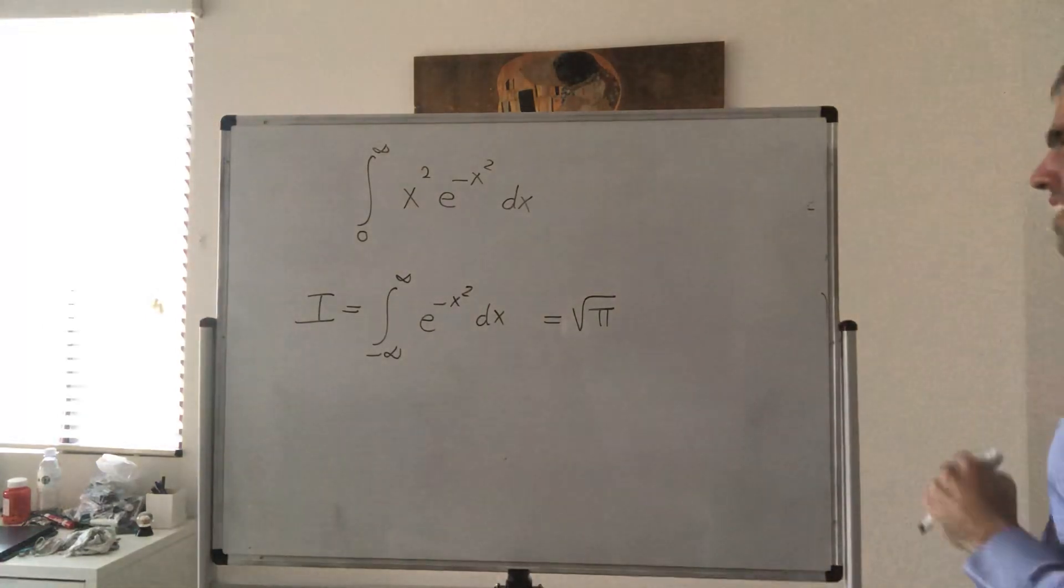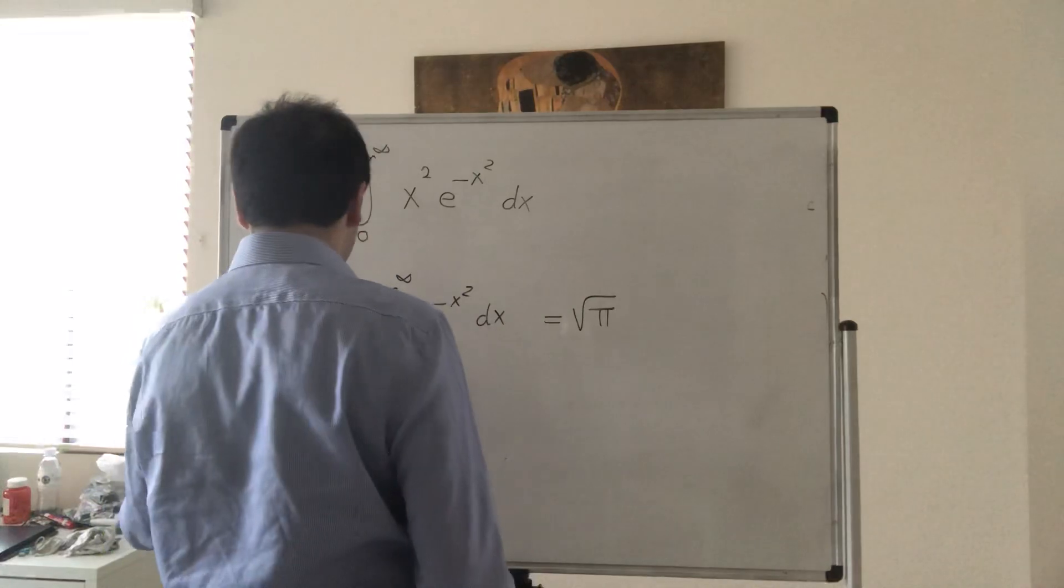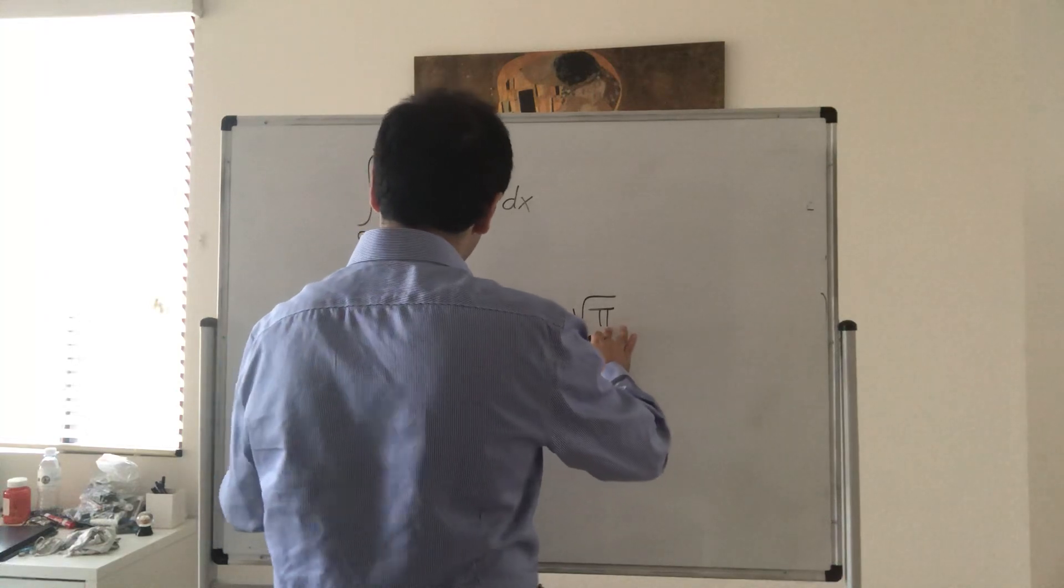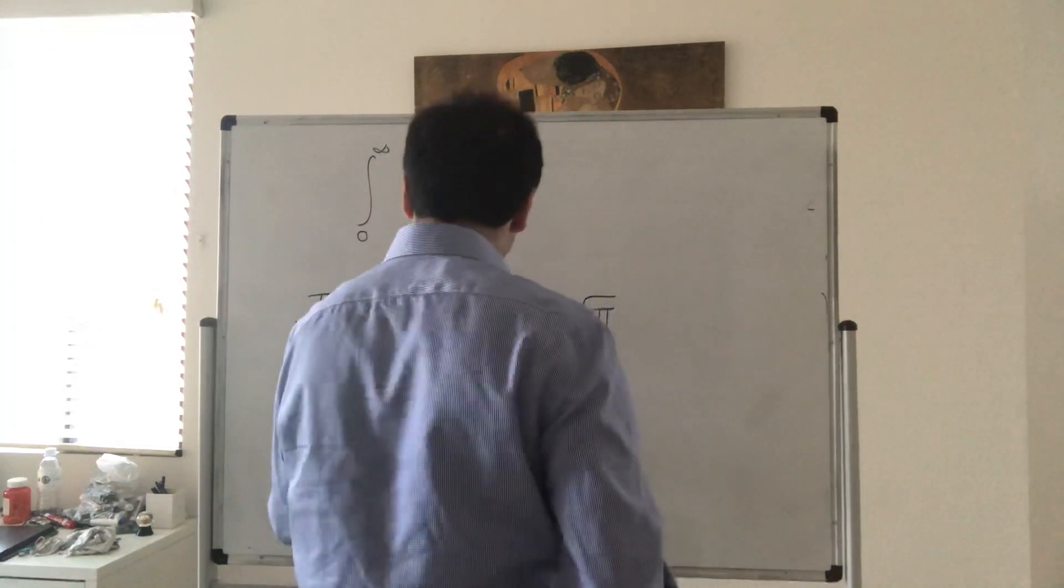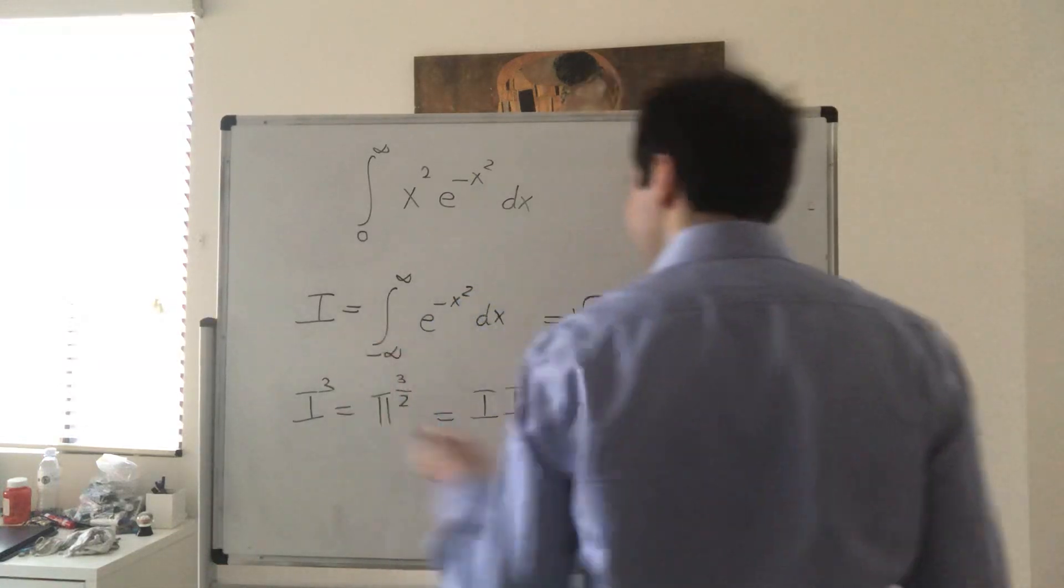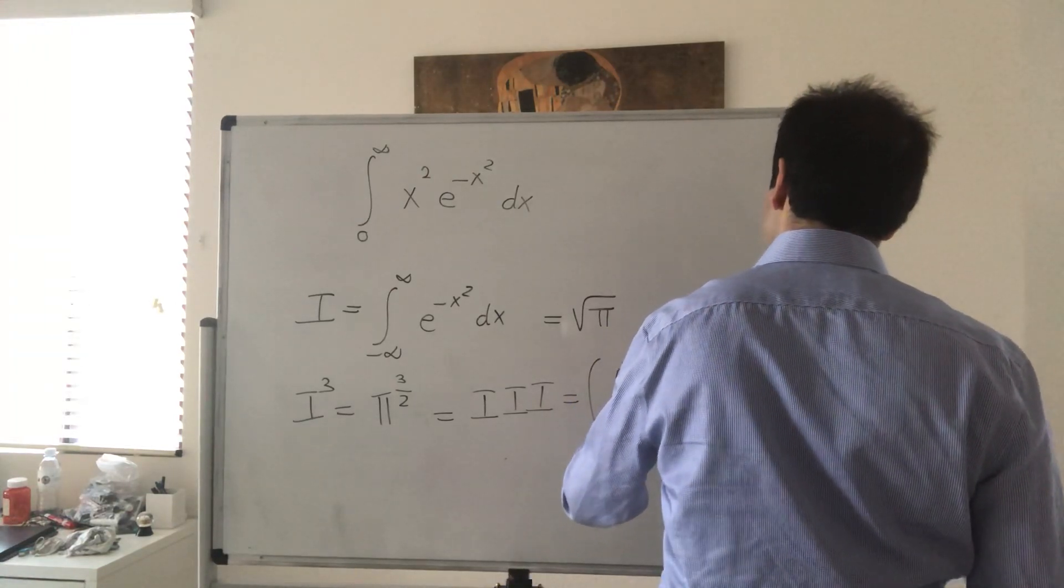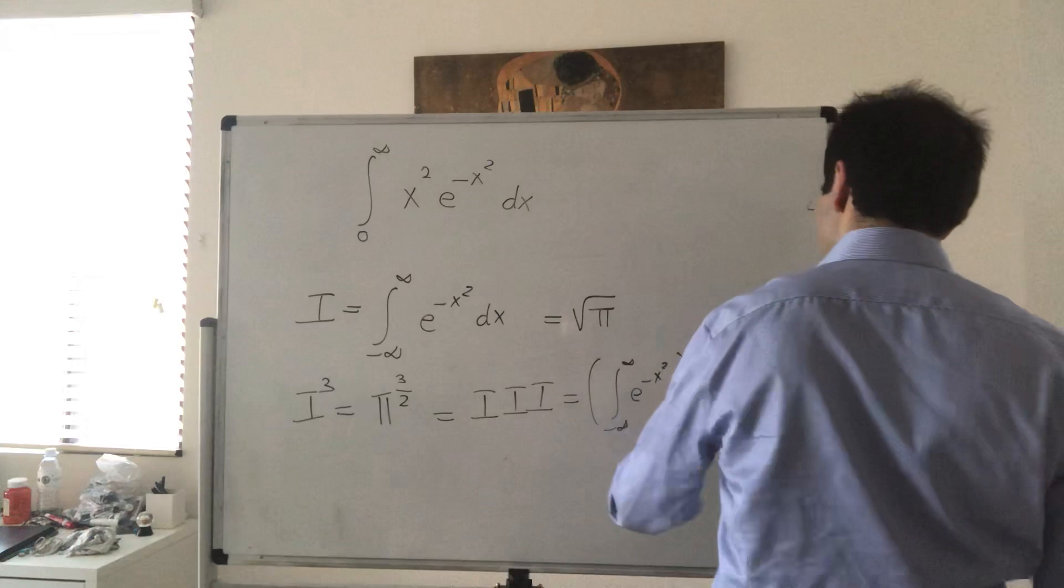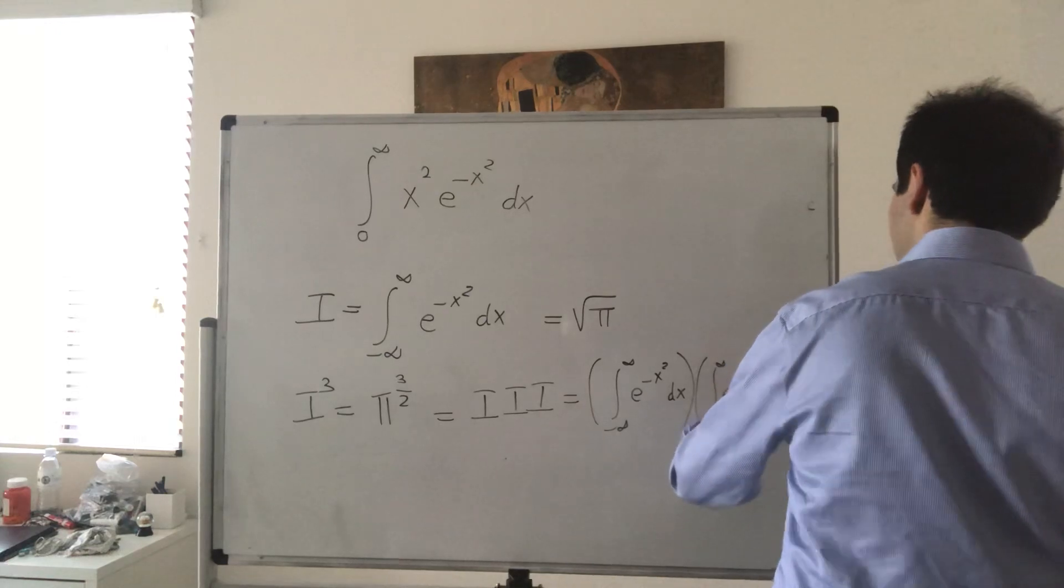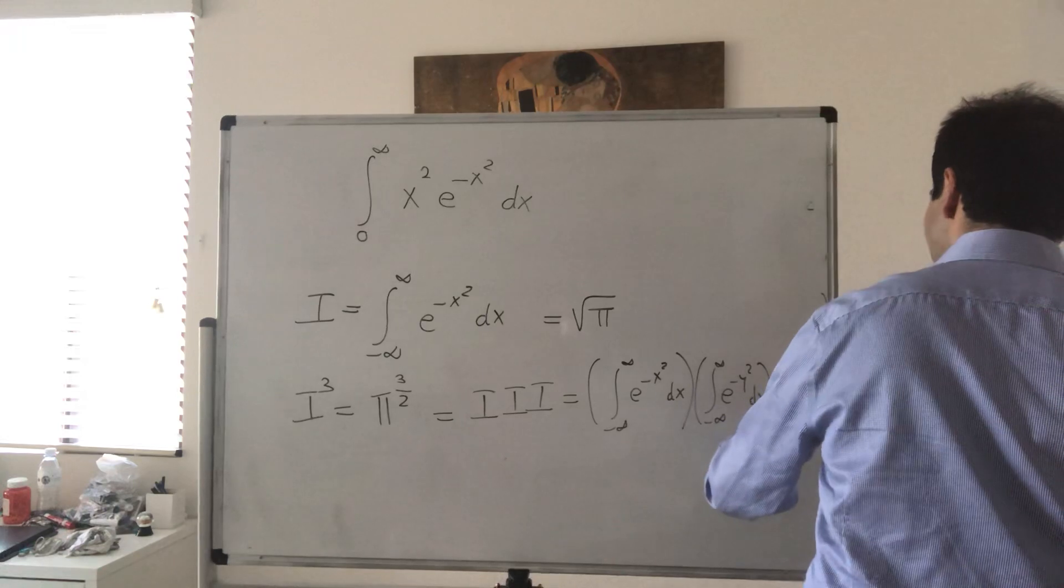Okay, that's fine. But now notice the following, here's a neat trick: take i cubed. On the one hand it's just square root of pi cubed, so pi to the three halves. But it's also i times i times i, which becomes the integral from minus infinity to infinity of e to the minus x squared dx, another way of writing this is the integral of e to the minus y squared dy, and lastly the integral of minus e to the z squared dz.